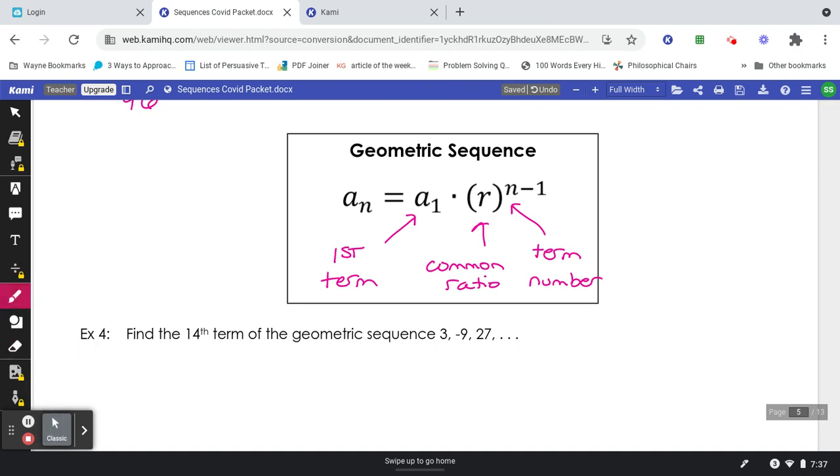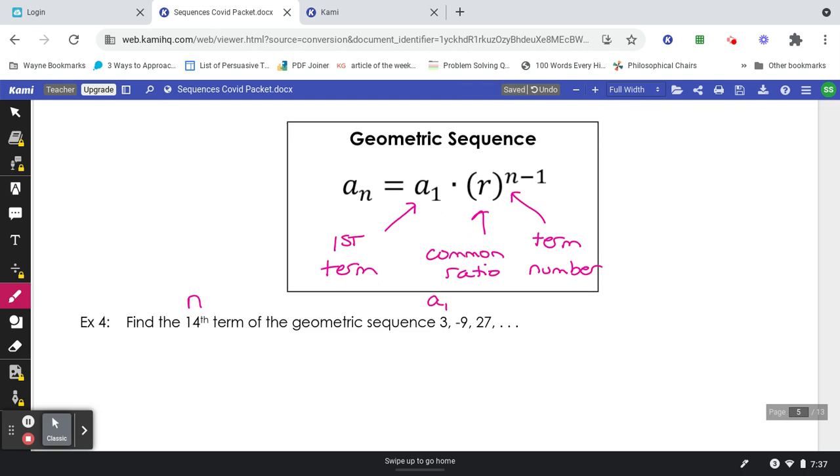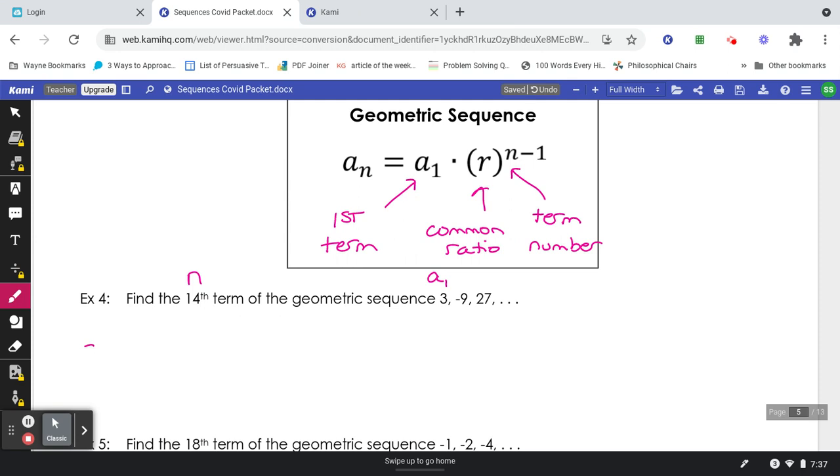All right, so find the 14th term. That's the term number. That's going to be the letter n of the geometric sequence 3, negative 9, 27. So 3 is going to be my first term, a sub 1. And then I'll find my common ratio by doing the second term divided by the first term. That gets me negative 3. That's my r.